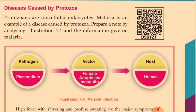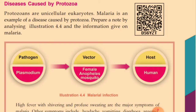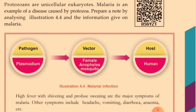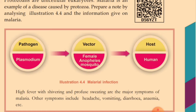Next we discuss protozoan diseases — diseases caused by protozoa. Protozoan are unicellular eukaryotes. One of the major important diseases caused by protozoa is malaria. Plasmodium is the pathogen that causes the protozoan disease malaria. The vector of malaria disease is the female Anopheles mosquito, which is the main vector of malaria disease.